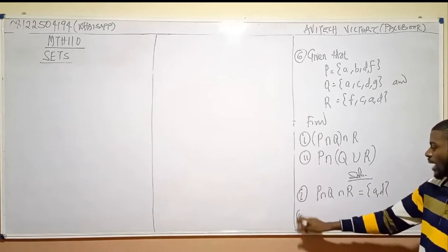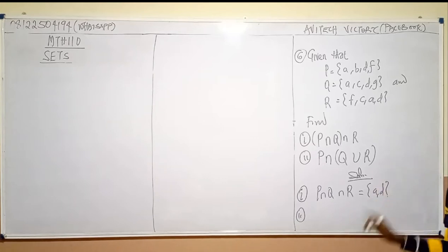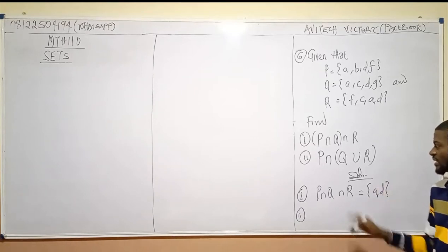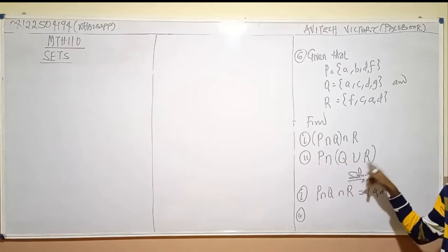But the second one might prove an issue because the signs are different. The signs are different. The first thing I'm going to do is this: let us find Q union R first. Let us find Q union R first of all.